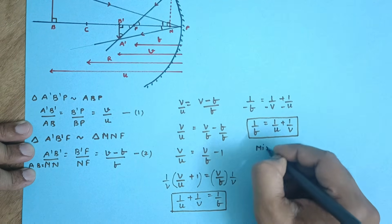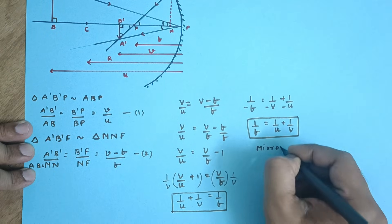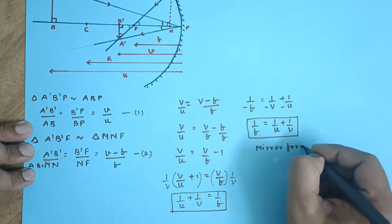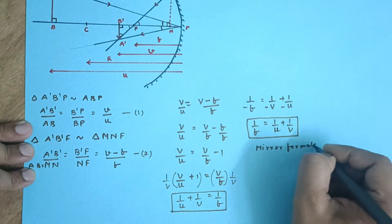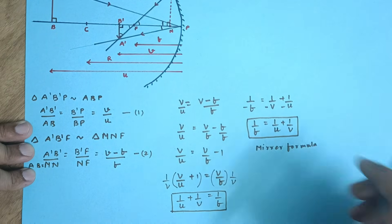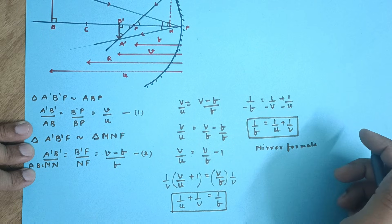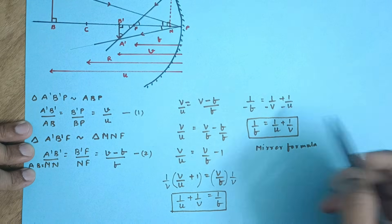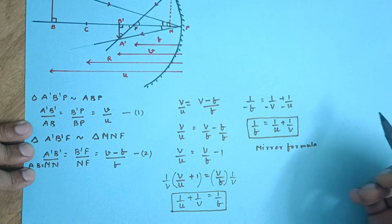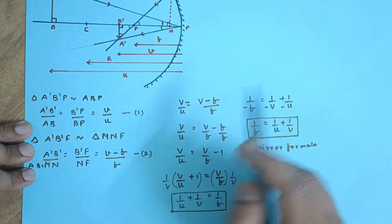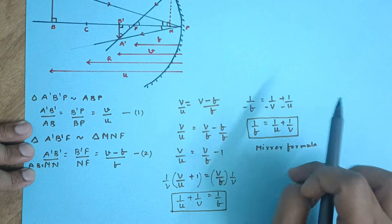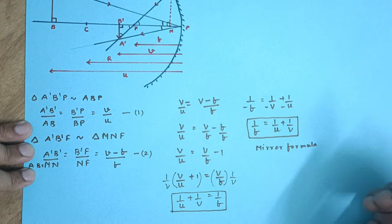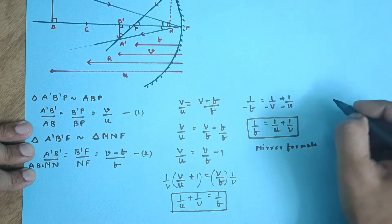This is our final mirror formula: 1/F = 1/U + 1/V. This mirror formula is applicable to all kinds of mirrors — convex mirror, concave mirror — and in part 2 of the video we are going to derive the same expression using the convex mirror.